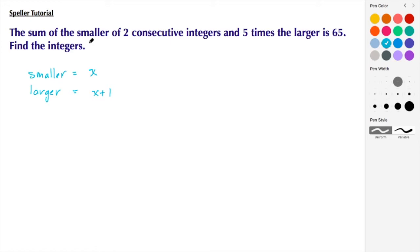Alright, so now let's continue with the problem. Here we see that we're looking for the sum of the smaller and 5 times the larger. So the smaller is just going to stay the same as x, and we're going to add that to 5 times the larger. Well, the larger is x plus 1, so we're going to multiply that times 5, and then we see that that result has to be 65.